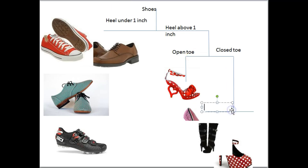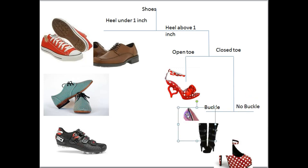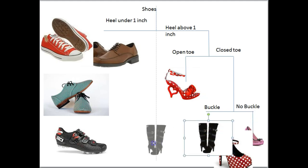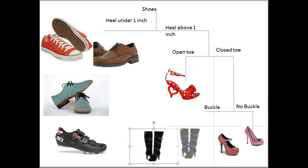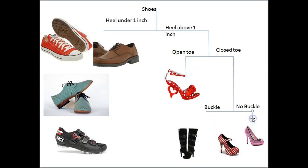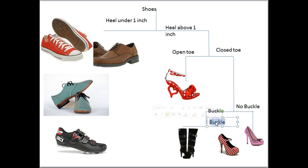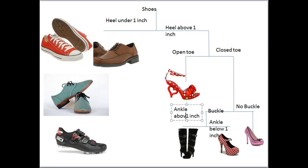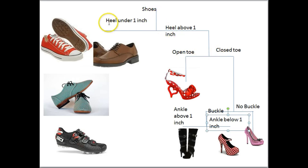A buckle is a physical characteristic — a bit of anatomy on the shoe, so to speak. Notice how much room this is taking with all these pictures — that's a lot of pages to print. We're down to our final two shoes in the high-heel group: one more decision to make. The easiest is ankle height — ankle below one inch versus ankle above one inch. Instead of saying 'high or low,' I'm defining it in numbers, quantifying it as much as possible.